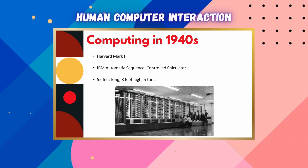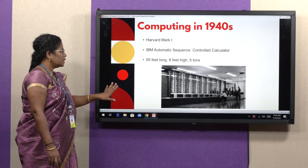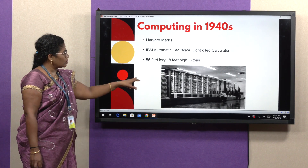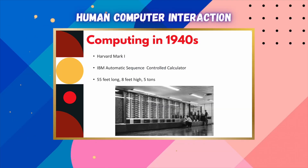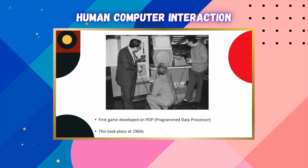In the 1940s, the Harvard Mark I — IBM's automatic sequence controlled calculator — was 55 meters long, 8 feet high, and 5 tons. ENIAC was the first electronic numerical integrator and computer in 1943, and the first programmed data processor was developed in the 1960s.